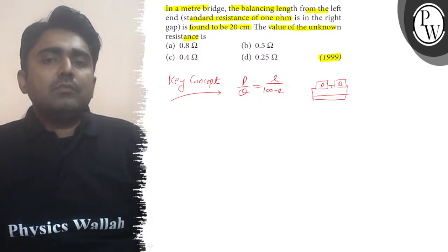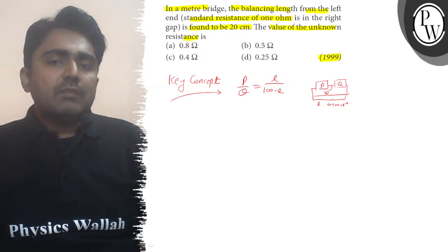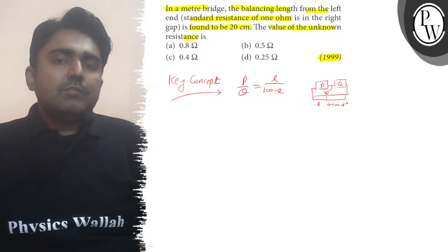Here L is the balancing length which we balance with the jockey's help. If it is L, then the other direction is 100 minus L. It is 1 meter total length. This is the equation.